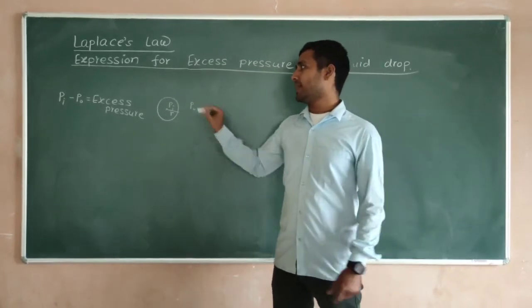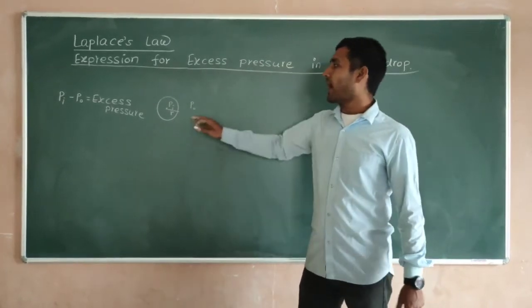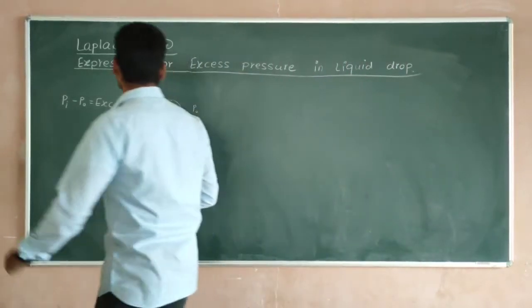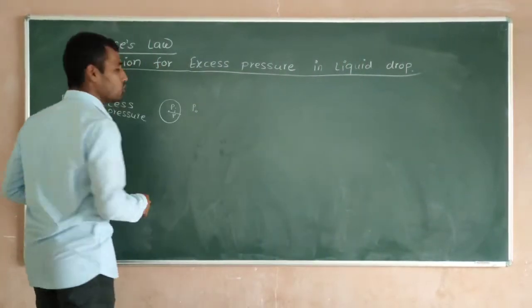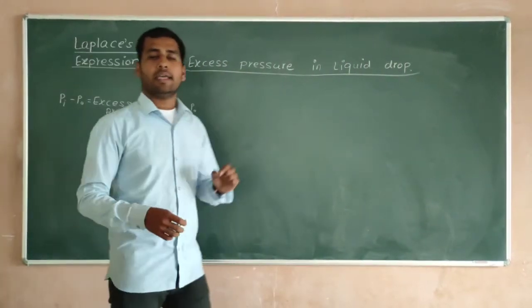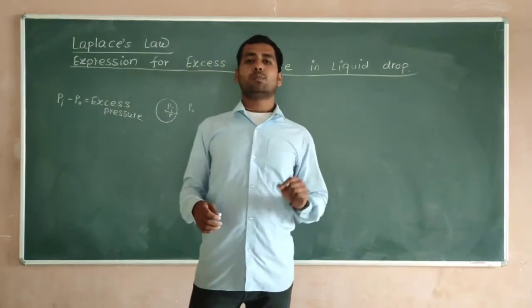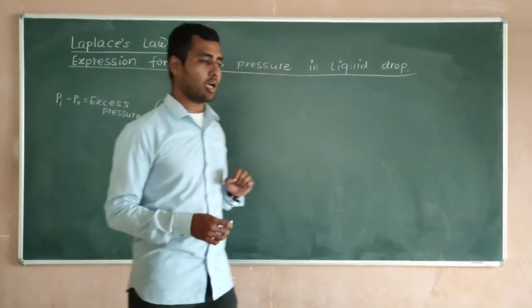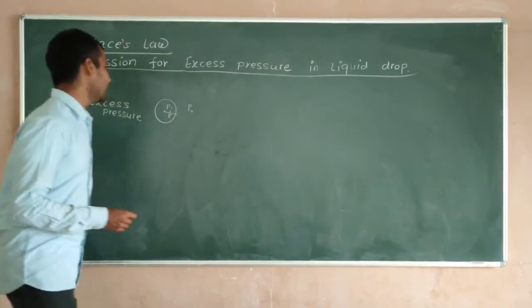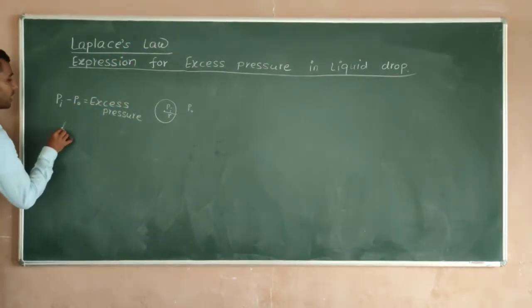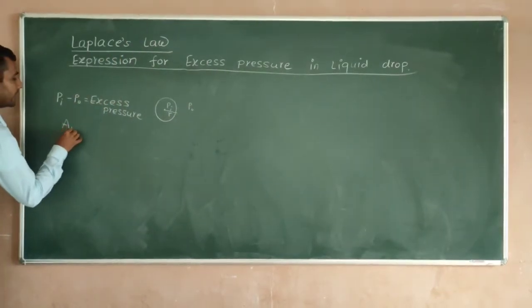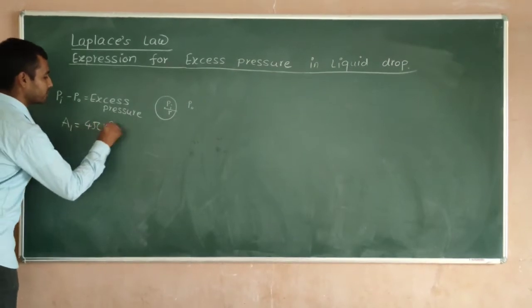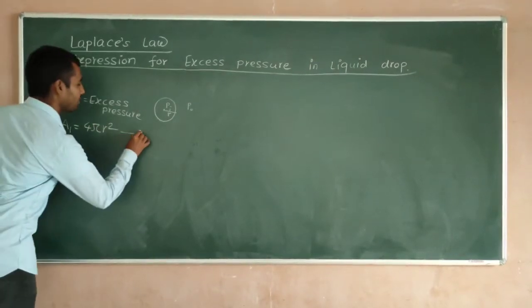That is the excess pressure. Here R is the radius of the sphere. In the case of a sphere, the area A1 is given by 4πR². This is equation 1.